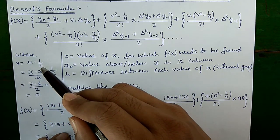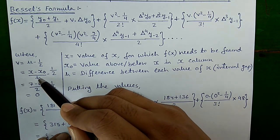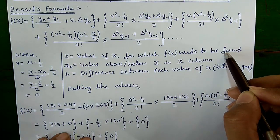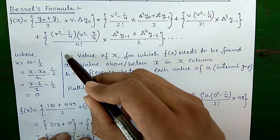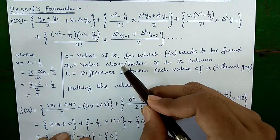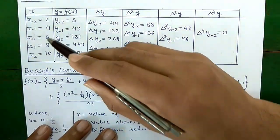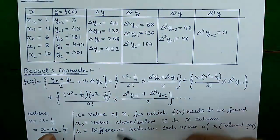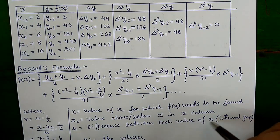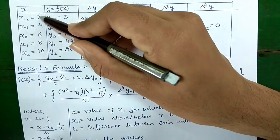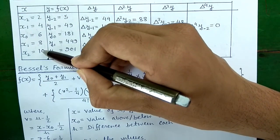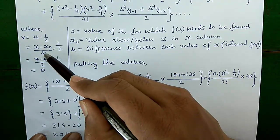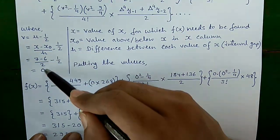Here, v is given by u minus 1/2, where u = (x − x₀)/h, and x is the value for which f(x) needs to be found. We need to find f(x) for x = 7. So x is 7, and x₀ is the value above 7 in the x column, which is 6. h is the interval gap between each x value, which is 2. Putting it in the formula: v = (7 − 6)/2 − 1/2 = 0.